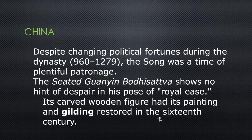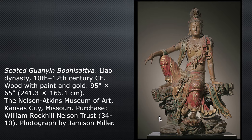Despite changing political fortunes during the dynasty, the Song was a time of plentiful patronage. The Seated Guan Yin Bodhisattva shows no hint of despair in his pose of royal ease. Its carved wooden figure had its painting and gilding restored in the 16th century. A bodhisattva is the representation of the Buddha that illustrates his desire to help other humans by not letting his spirit merge with the Great One, but instead holding back from nirvana in order to lead others along this path.